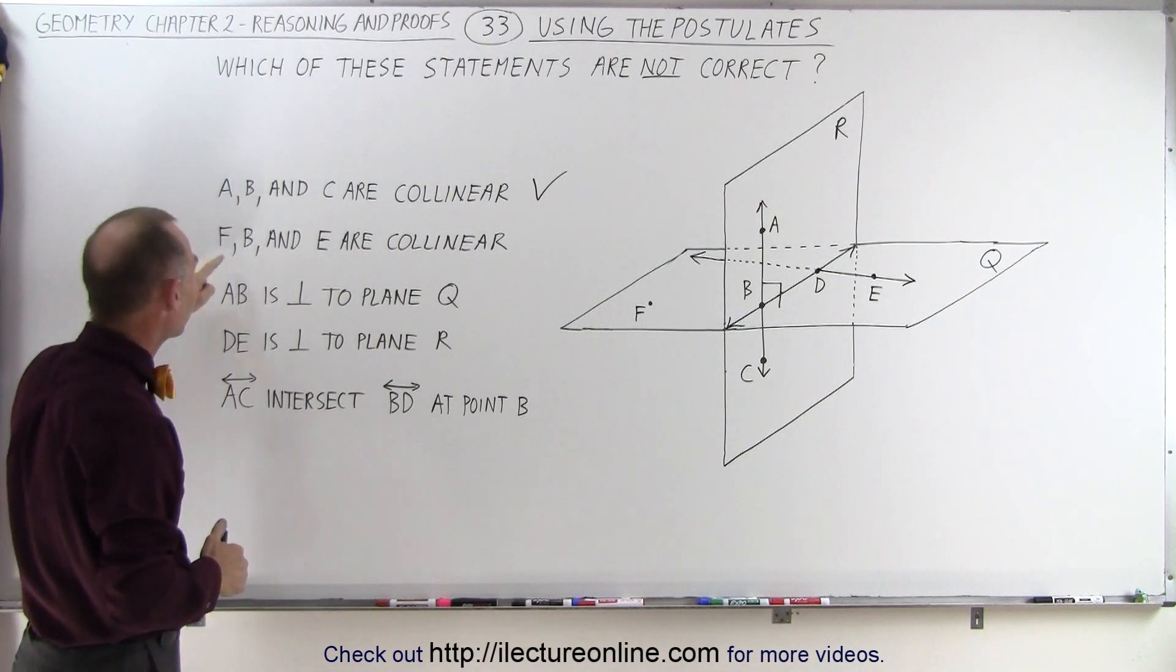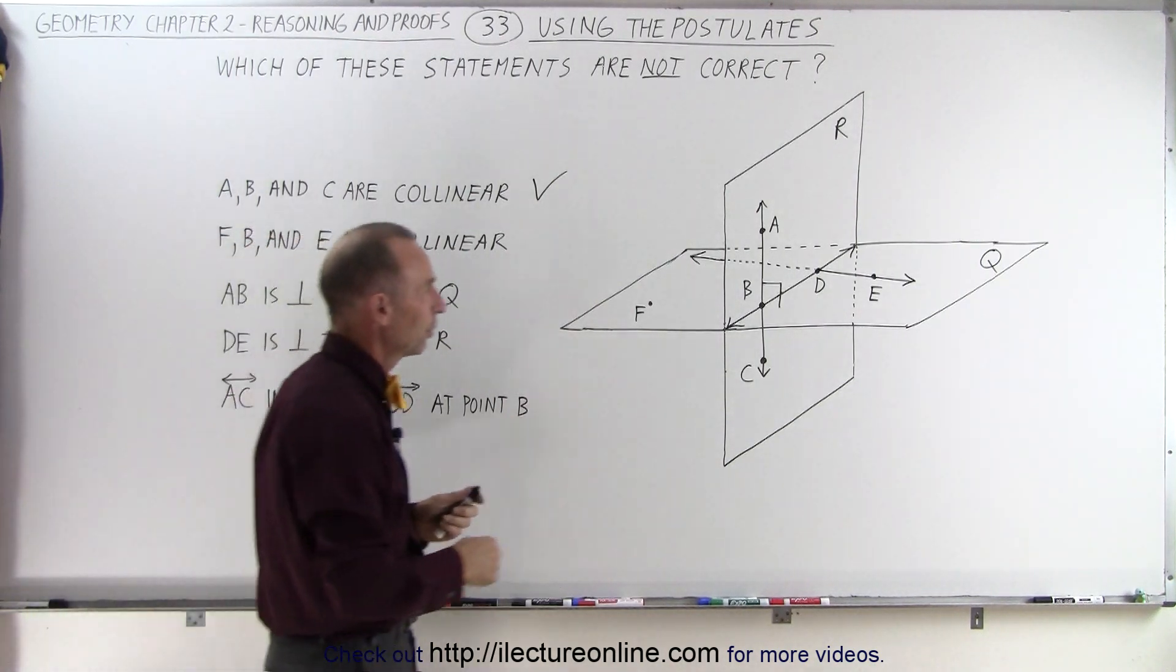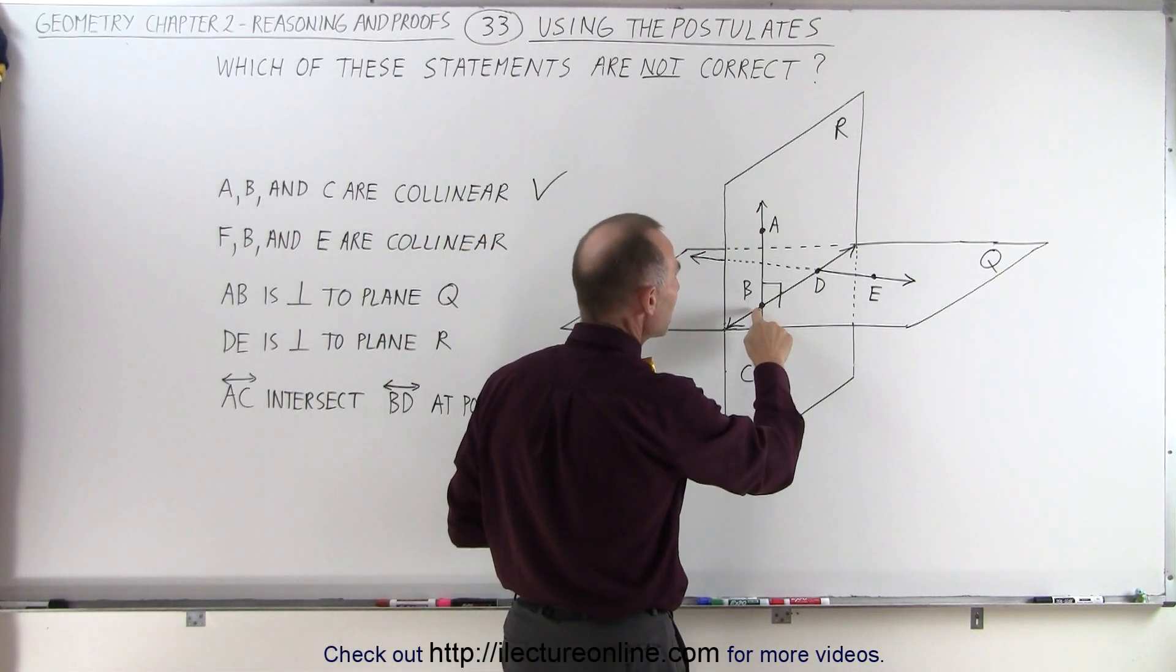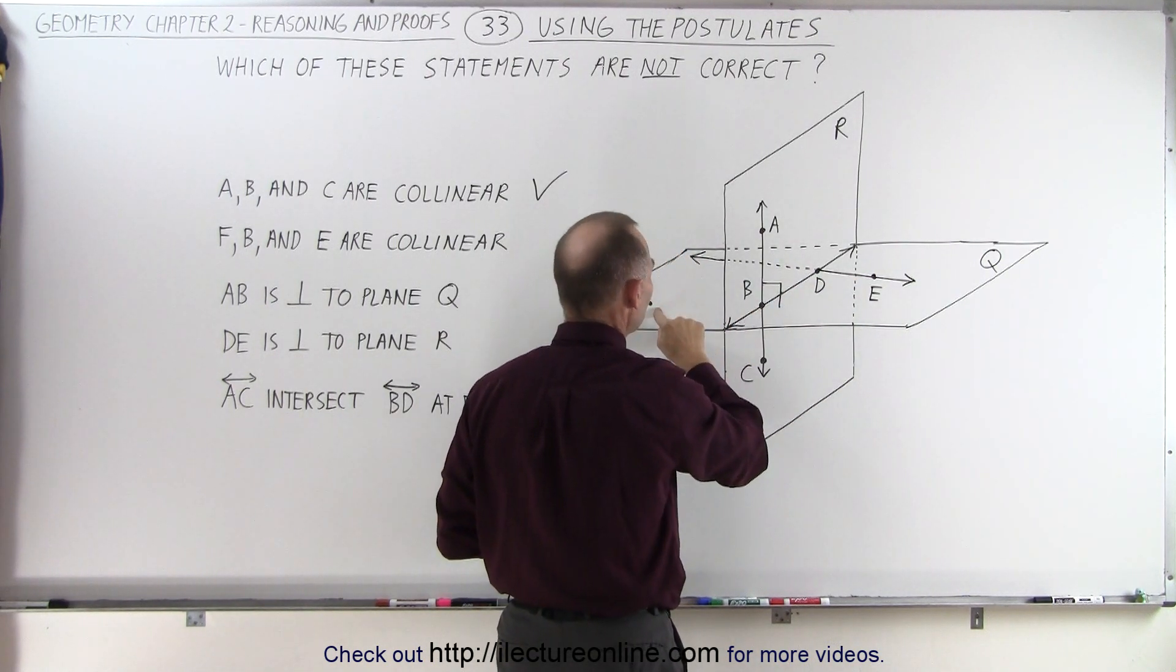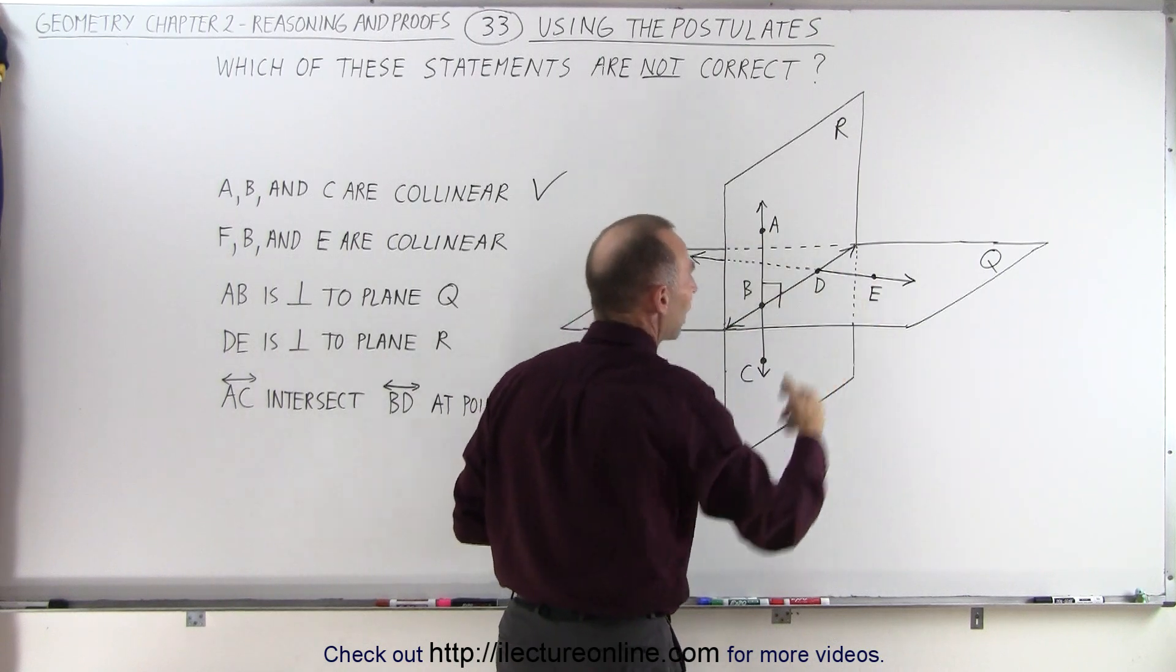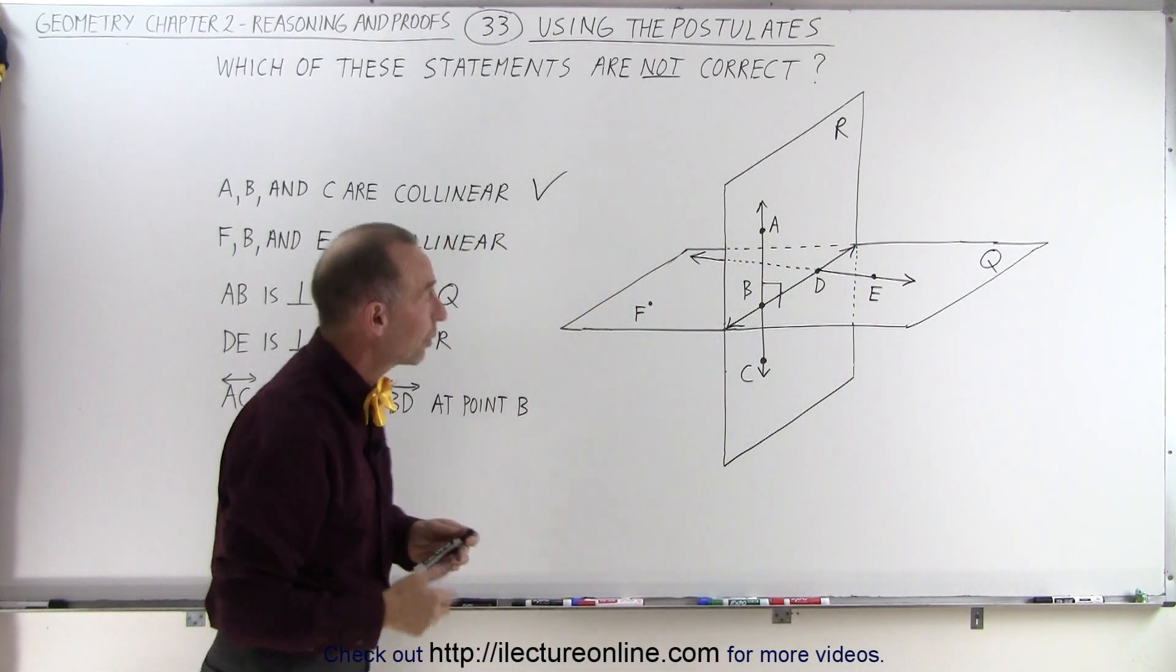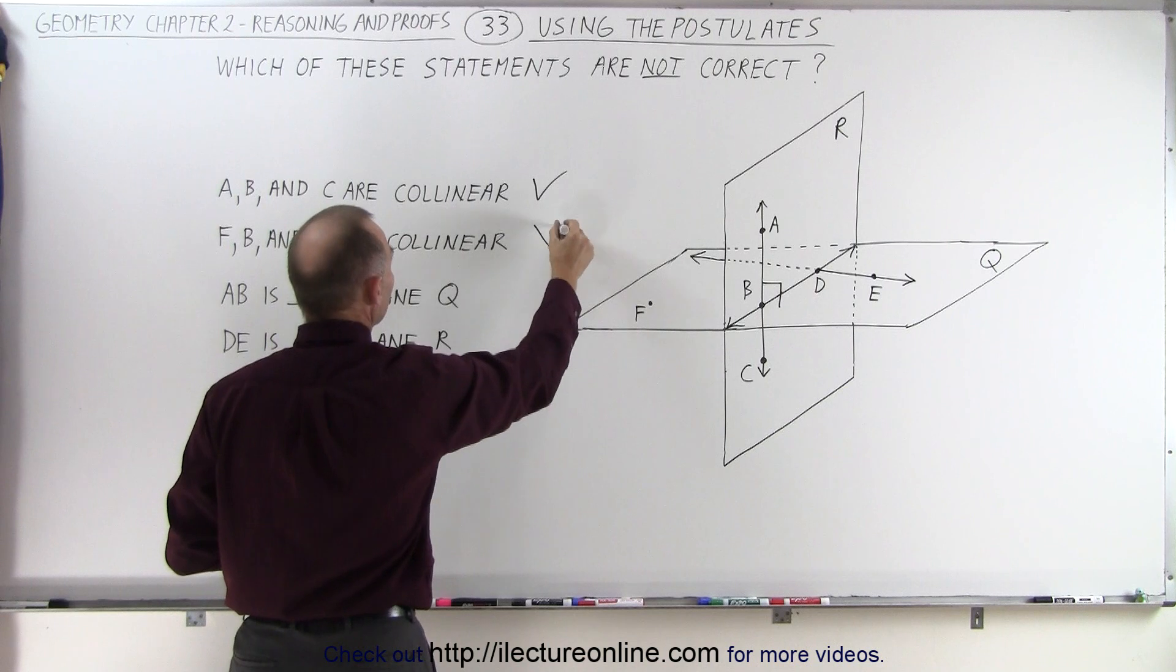The next statement: F, B, and E are collinear. Well we can see that B and E are not collinear because they do not lie on the same line, and F does not lie on either one of these two lines, so therefore they cannot be collinear. So that's not a correct statement.